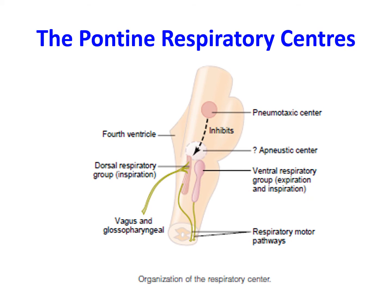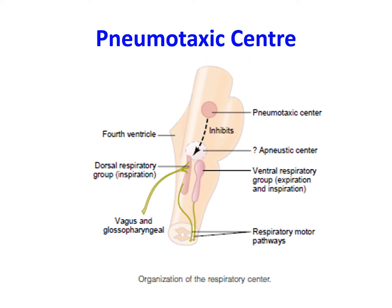The pontine respiratory centers are two bilateral groups of neurons in the pons that modify and regulate the function of the medullary centers. They are known as the pneumotaxic center and the apneustic center. The pneumotaxic center neurons are present in the dorsal surface of the upper pons. When stimulated by the apneustic center, it makes respiration regular by inhibiting the apneustic center and inhibiting the dorsal respiratory group at regular intervals. It also makes respiration rapid by controlling the duration of the ramp rhythm. The pneumotaxic center controls the switch-off point of inspiration by sending inhibitory impulses to the apneustic center.